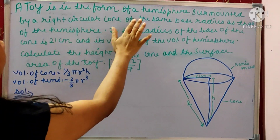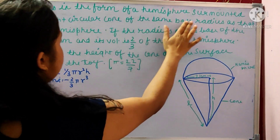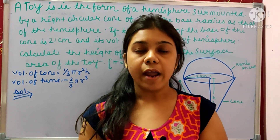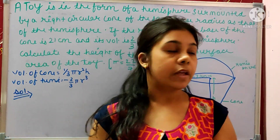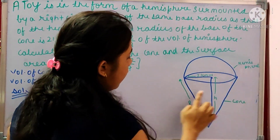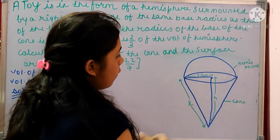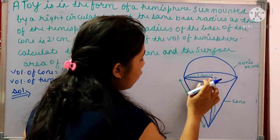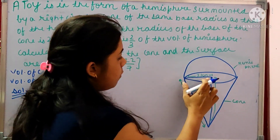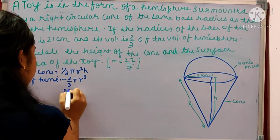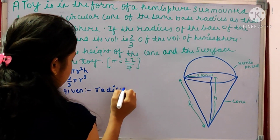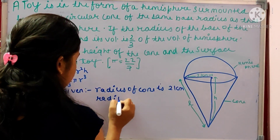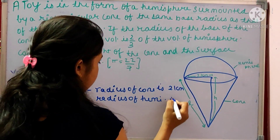Moving toward the next question. The question says that a toy is in the form of a hemisphere surmounted by a right circular cone of the same base radius as that of the hemisphere. The cone is put over the hemisphere, making a toy, with the same base radius. The radius of the cone is 21 centimeter and the radius of the hemisphere is also 21 centimeter.